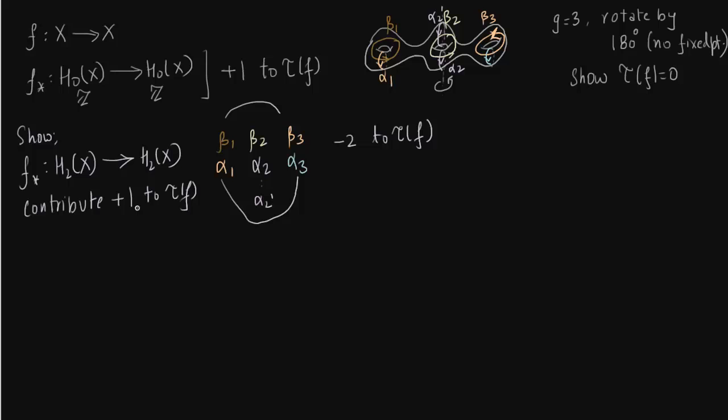So now we want to show that the f star map from H2(X) to H2(X) contributes plus 1 to the Lefschetz number. Now this will contribute plus 1 to Lefschetz number if we show it is the identity. So the rest of this lecture we are going to spend on showing this f star is an isomorphism. So let us first draw our diagram and we will show its commutativity. We are going to show f star is an iso by first establishing this following isomorphism.